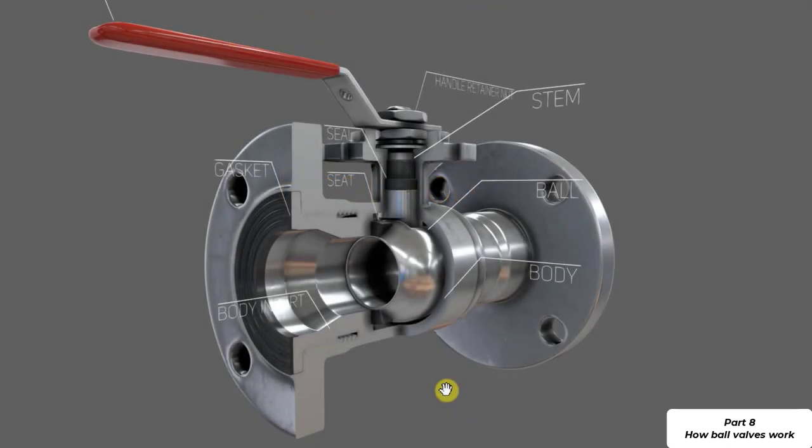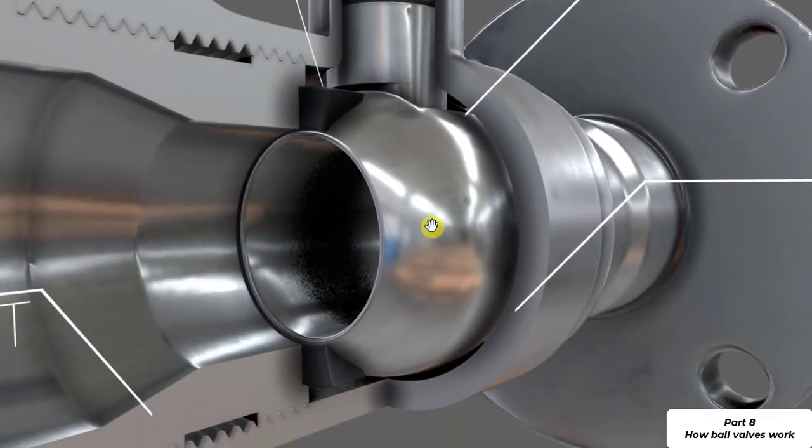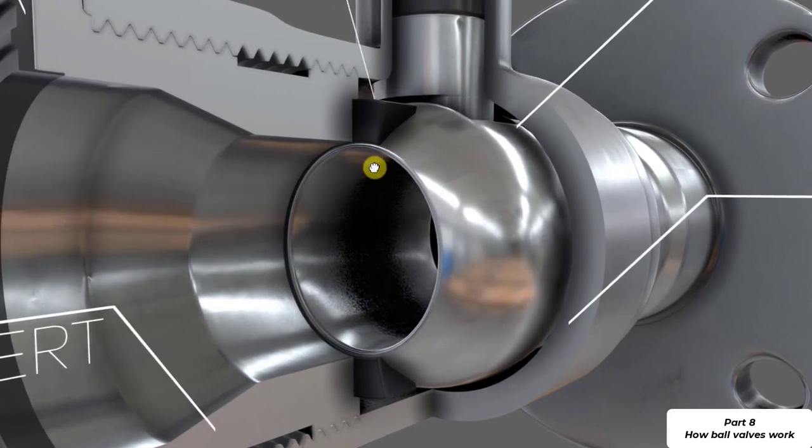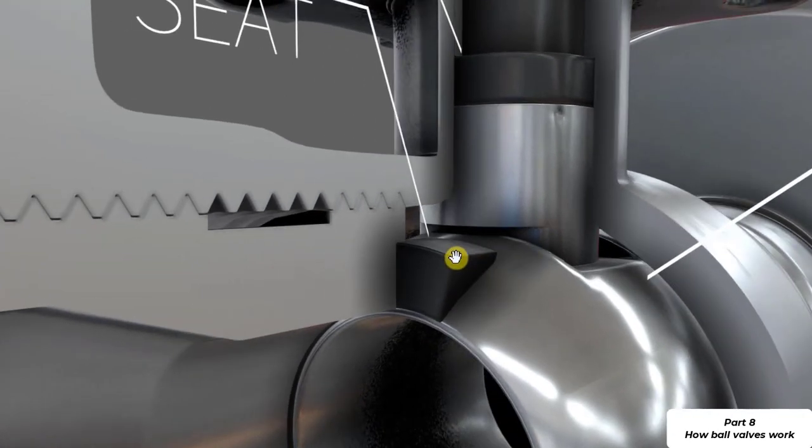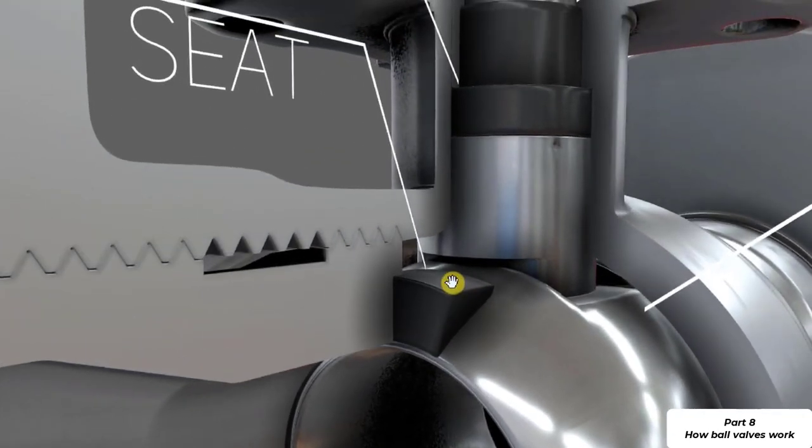As you can see the disc is manufactured of a metal material, looks to be stainless steel as is the body itself. The seat is manufactured from a softer material and this is going to be perhaps teflon or some type of elastomeric material, perhaps neoprene or a stiff rubbery type of material. This allows us to press the disc in tight against the seat and we get a really good seal.